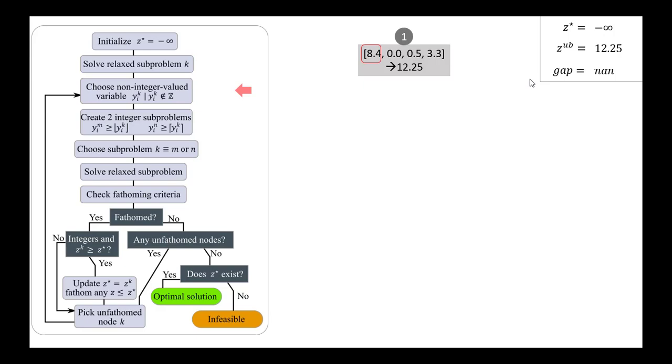The next thing we're going to do is we're going to choose a non-integer-valued variable. So here we've chosen 8.4. This is x₁. That is a variable whose value in the solution is not an integer. So we wouldn't want to choose x₂ because that already is an integer. We want to force this solution to consider integer values that bound the one that we've selected. So we select our non-integer-valued variable. In this case, we're choosing the x₁, which has a value of 8.4.